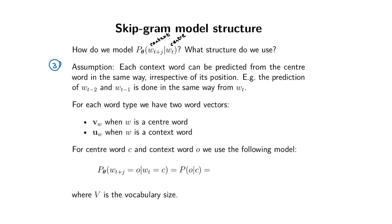If we've got a center word C and a context word O — I'm not exactly sure why we use O for context words, but you can think of O as the little circle around the window, so everything inside the circle is a context word.